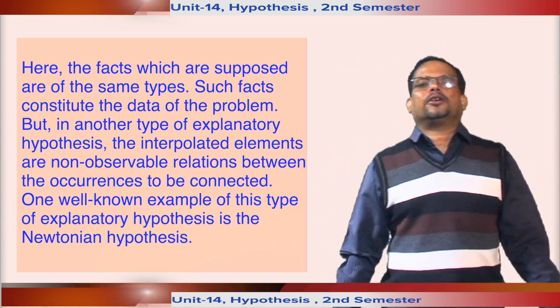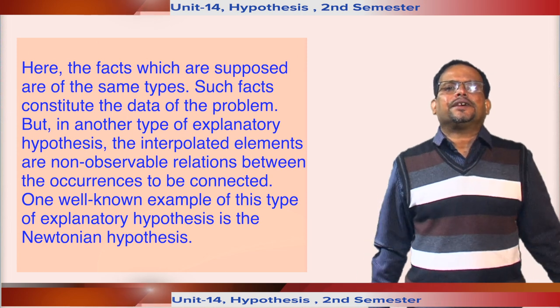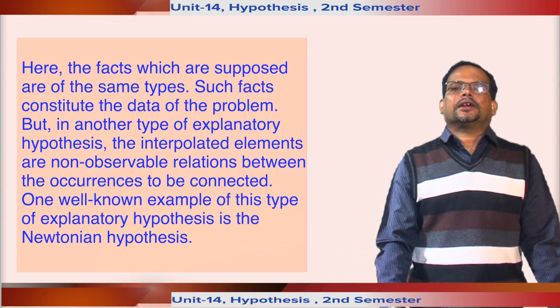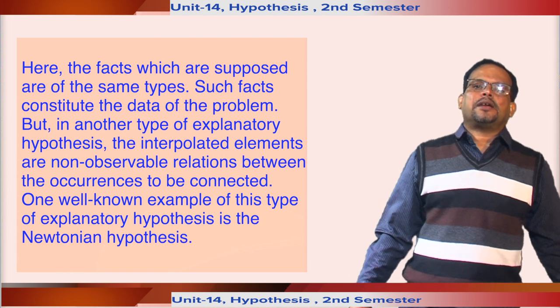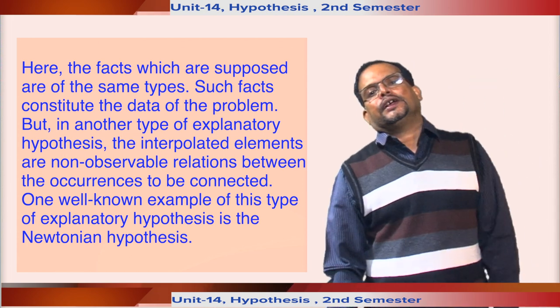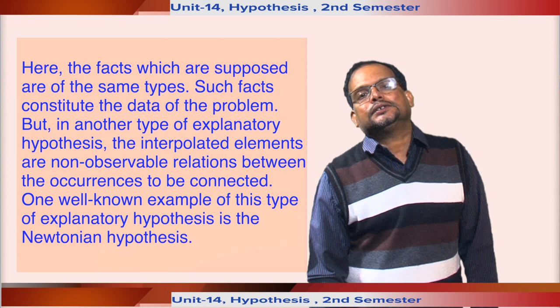But in another type of explanatory hypothesis, the interpolated elements are non-observable relations between the occurrences to be connected. One well-known example of this type of explanatory hypothesis is the Newtonian hypothesis.